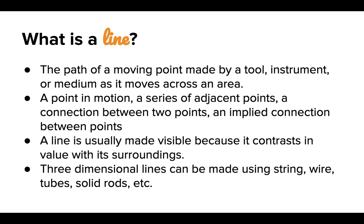The next basic element is line. You know what a line is, but you might not be familiar with how we define this word within an art context. Lines are made from the path of a moving point made by a tool, instrument, or medium as it moves across an area. You can also think of a line as a point in motion, a series of adjacent points, a connection between two points, or an implied connection between points. A line is usually made visible because it contrasts in value with its surroundings. In this class, we'll be focusing on two-dimensional lines, though three-dimensional lines can be made using string, wire, tubes, solid rods, etc.